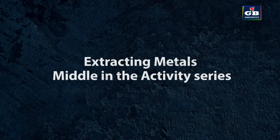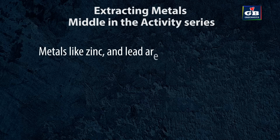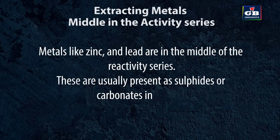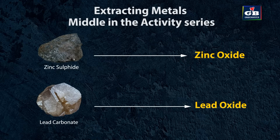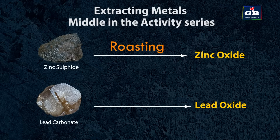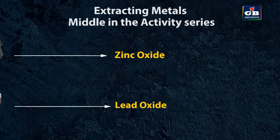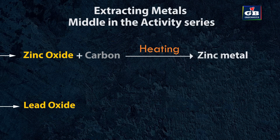Extracting metals in the middle of the activity series: metals like zinc and lead are in the middle of the reactivity series. These are usually present as sulfides or carbonates in nature. First, they are converted to oxides — sulfides are converted to oxides by roasting and carbonates are converted to oxides by calcination. The metal oxides are then reduced to corresponding metals by using suitable reducing agents such as carbon. For example, zinc oxide is heated with carbon and is reduced to metallic zinc.